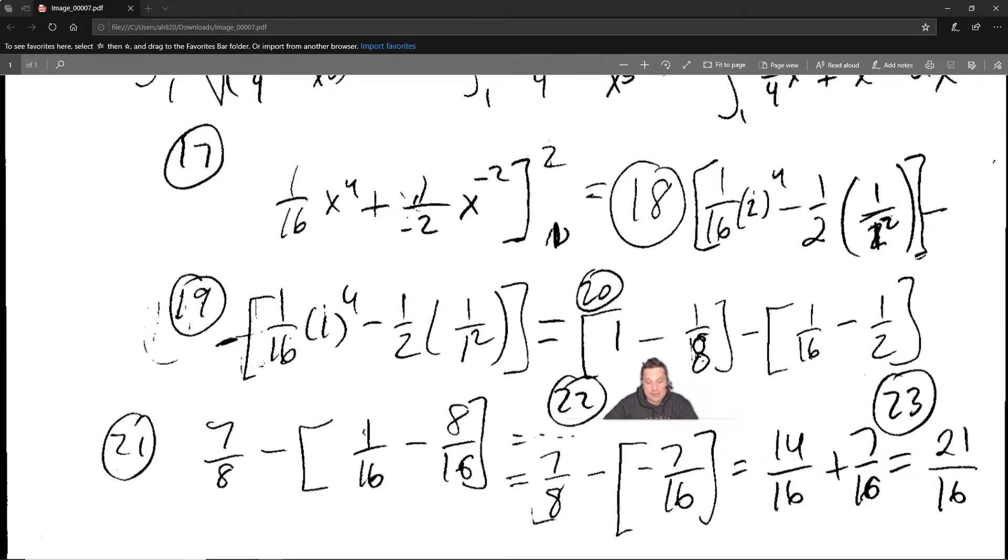Continue. So 1 minus 1 eighth that's going to give you essentially 8 eighths minus 1 eighth which is 7 eighths. And then over here I'll have 1/16 minus 1 half. Well that's the same as 1/16 minus 8/16. Then it's going to give you at step 22, 7 eighths minus a negative 7/16. The two negatives will make a positive of course. So you end up with the following: 14/16. Where am I coming, where's that coming from? Because 7 eighths converted to 16ths is 14/16. You just multiply 7 by 2 to get 14, 8 by 2 is 16. So it becomes 14/16 plus 7/16 which is 21. And that is the whole answer then lastly. 21/16 is the length of that curve.